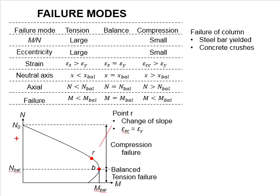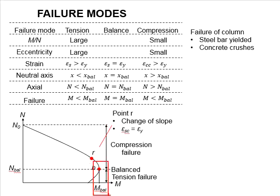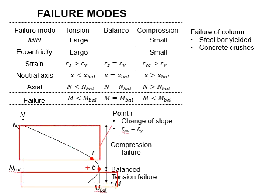For axial load larger than N balance, compression failure occurs. When the axial load is less than N balance, the column is likely to fail in tension. In terms of the moment, N balance represents the largest moment that can be carried by a column. Both the tension and compression regions will have a moment less than the moment at the balanced condition.